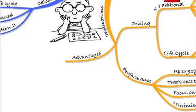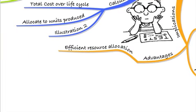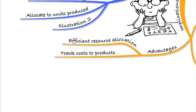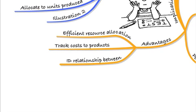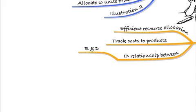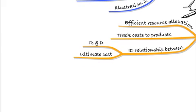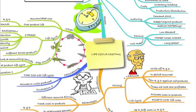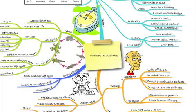The advantages of life cycle costing are that it gives more efficient resource allocation — you can allocate resources to products that will make the most profit over their life cycle. We track costs to products rather than to time, enabling us to understand whether a product is profitable. It also identifies the relationship between the research and development phase and the ultimate cost of the product, which is crucial for the business to understand. Make sure you attempt the test your understanding questions at the end of your workbook chapter, and then do any past paper questions to ensure you understand this topic thoroughly.